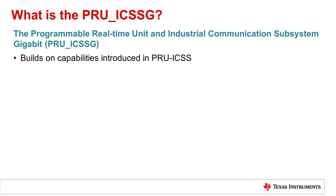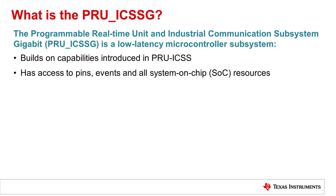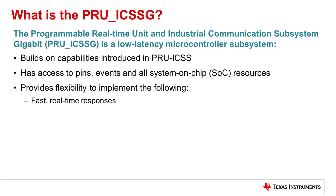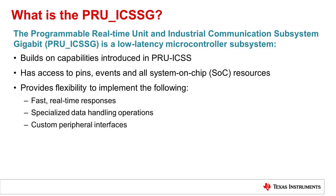Similar to the PRU-ICSS, the PRU-ICSS-G is a low latency microcontroller subsystem that is included in a number of Texas Instruments processors and is efficient for low latency and I/O control. This subsystem has access to pins, events, and all system-on-chip resources, and can be used to implement fast real-time responses, specialized data handling operations, and custom peripheral interfaces.